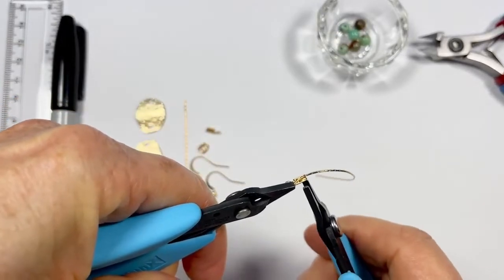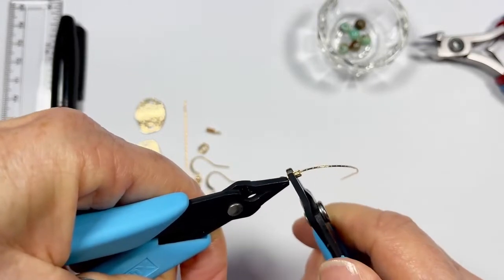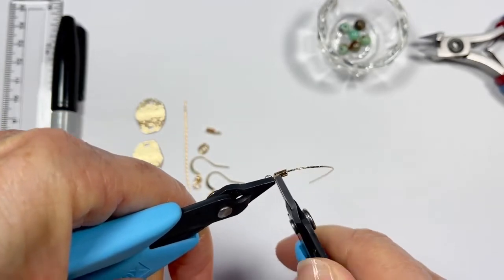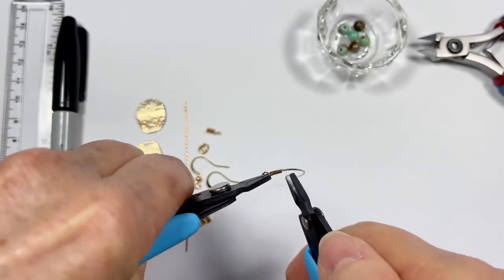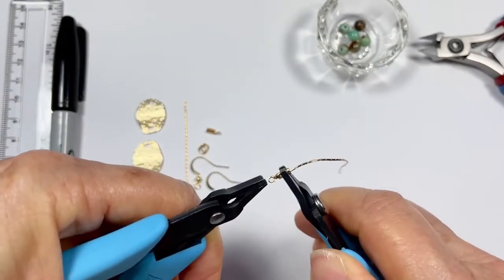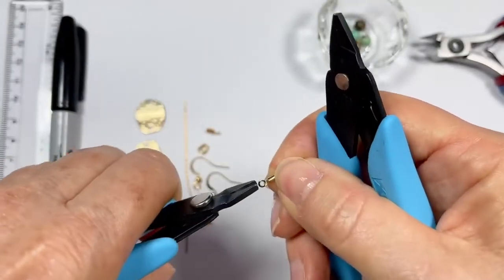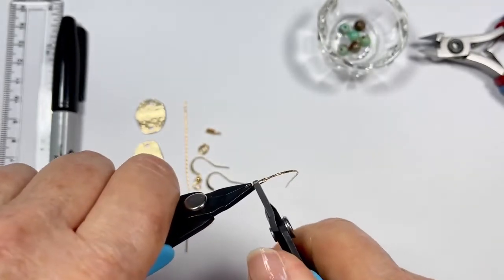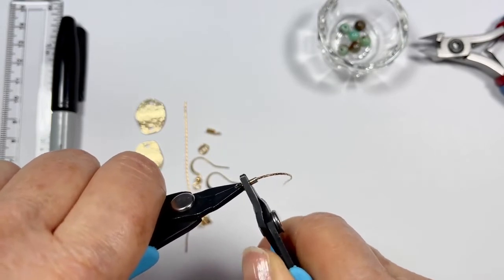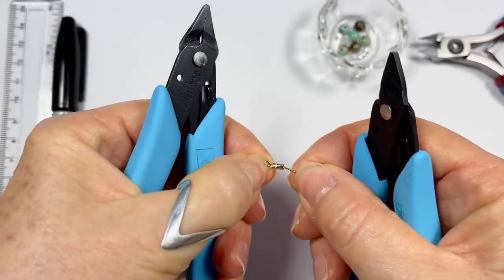I'm going to take the other flat nose plier and bring one side of this down like that, nice and snug, and then bring the other side over. I've got that the wrong way around there. Just draw this down so it's nice and snug around the beading chain. Just take your time with this and you can see that that's caught there.